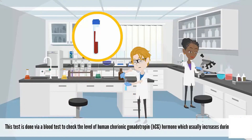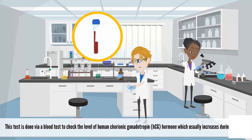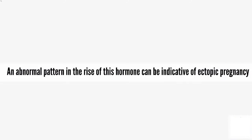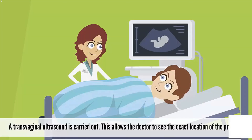The test is done via blood test to check the level of human chorionic gonadotrophin hormone, which is usually increased during pregnancy. An abnormal pattern in the rise of this hormone can be indicative of ectopic pregnancy. A transvaginal ultrasound is also carried out, which allows the doctor to see the exact location of the pregnancy.